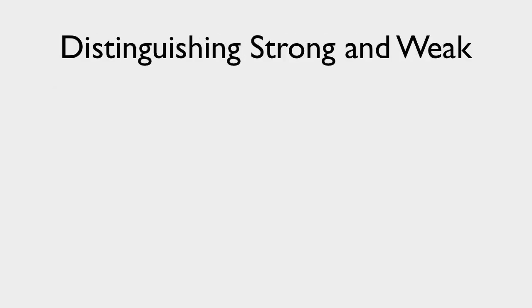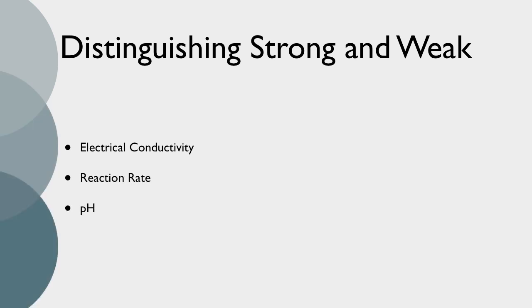There are three ways to distinguish strong and weak acids and bases: electrical conductivity, reaction rate, and pH. We've already learned in topic 4 that anything that dissociates into ions in water will conduct electricity.